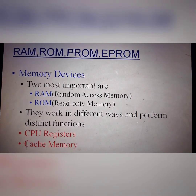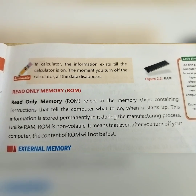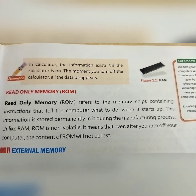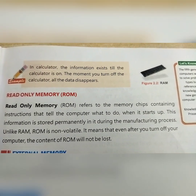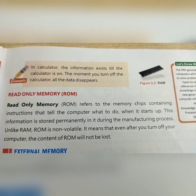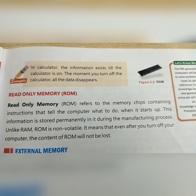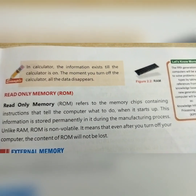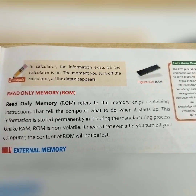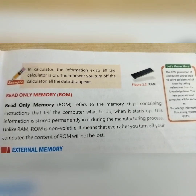First, the CPU also stores and works in cached memory. Now the second thing is Read Only Memory — ROM. ROM refers to the memory chip containing instructions that tell the computer what to do when it starts up, and this information is stored permanently in it during the manufacturing process. Unlike RAM, ROM is non-volatile, meaning that even after you turn off your computer, the content of ROM will not be lost.